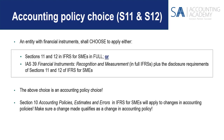I want to indicate that since IAS 39 only deals with recognition and measurement, the disclosure in the notes will still have to be done in terms of Section 11 and 12 anyway. Seeing that it's an accounting policy choice, this choice must appear in your accounting policy notes at the beginning of your notes to the financial statements. Also take into account that when you decide to make a change from one option to the other, that would represent a change in accounting policy and then Section 10 of the IFRS for SMEs would have to be applied.